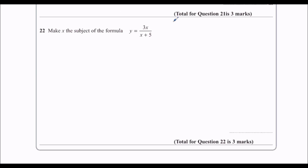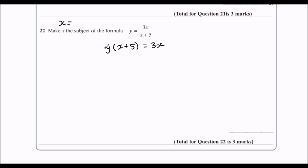We need to make x the subject of the formula, so we need to get x equals. The first thing we're going to do is get rid of the fraction, so I'm going to multiply both sides by (x + 5). This gives us x + 5 equals 3x. I'm going to expand the bracket.